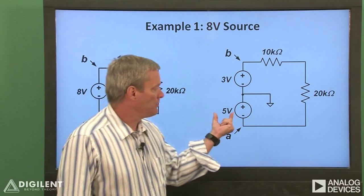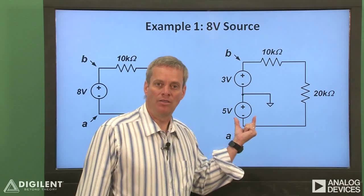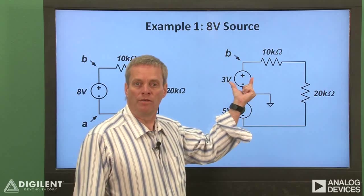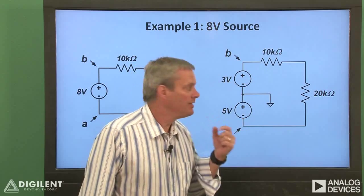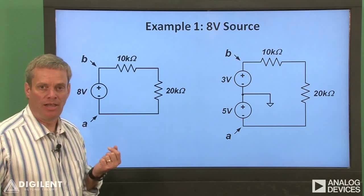If we place the ground at this node, we can implement our 5 volt source with V minus on the voltage instrument and our 3 volt source with one of the waveform generator channels. Now V sub BA is 8 volts, the same as it is on the circuit on the left.